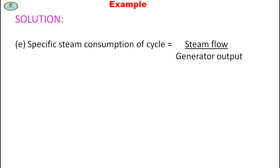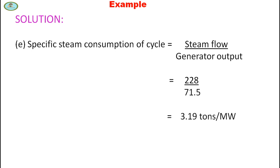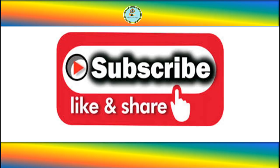Specific steam consumption of the cycle equals steam flow divided by generator output = 228 / 71.5, giving SSC = 3.19 ton/MWh. Friends, if you like this video, please like and share. Also, don't forget to subscribe to this channel and press the bell icon for notifications of upcoming videos. Thank you.